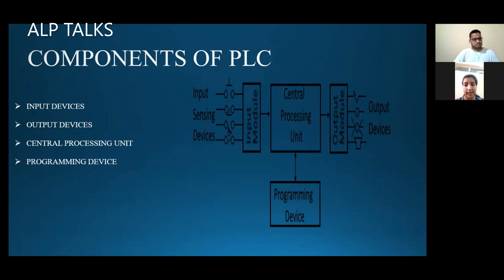The main part is the central processing unit. In the PLC it consists of a microprocessor which stores memory. Whatever program we upload via communication cable from the software is stored in this memory. It is a non-volatile memory, so if the power suddenly goes off, the program remains stored in the PLC — you don't need to worry about losing it.